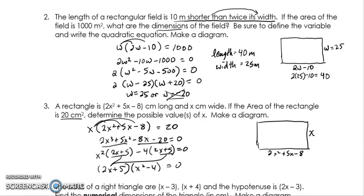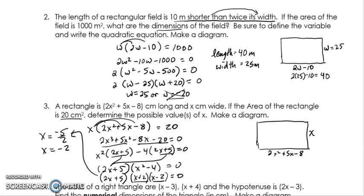The leftover is x squared minus 4, giving us 2x plus 5 times x squared minus 4 equals 0. You have to recognize that x squared minus 4 is a difference of two squares, so it factors further into x plus 2 times x minus 2. So the three brackets give three solutions: from 2x plus 5, x equals negative 5 over 2; from x plus 2, x equals negative 2; from x minus 2, x equals positive 2. Scrapping both negative answers, the only value that makes sense is x equals 2.